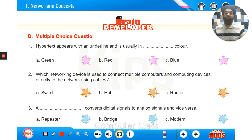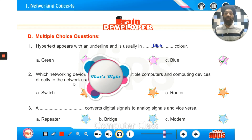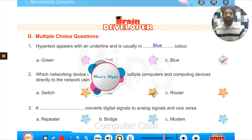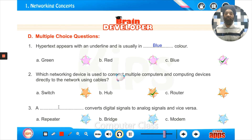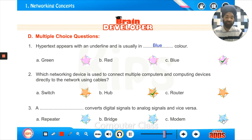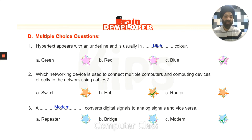Now we have multiple choice questions where we tick the correct answer. Hypertext appears with an underline and is usually in blue color. Which networking device is used to connect multiple computers and computing devices directly to the network using cables? That is the hub. A blank converts digital signals to analog signals and vice versa — that is a modem. Modem stands for modulation and demodulation.